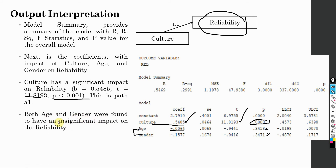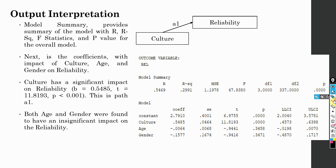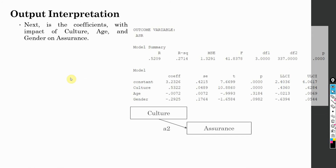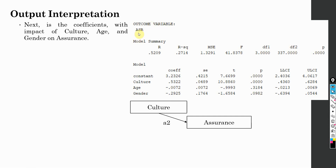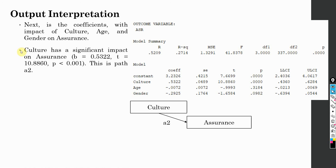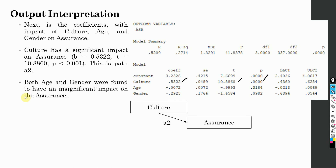Both age and gender were found to have an insignificant impact on reliability. The next section of the output has outcome variable assurance — this is path A2. Culture has a significant impact on assurance: beta is 0.5322, t-statistic is 10.8860, and the p-value is significant. Both age and gender were found to have an insignificant impact on assurance.